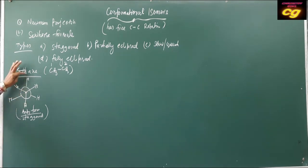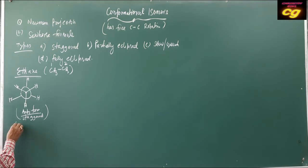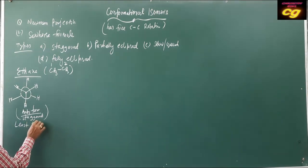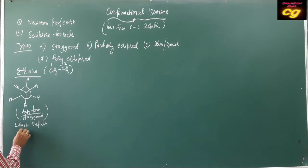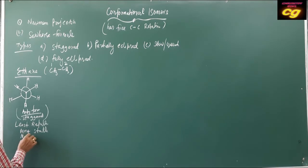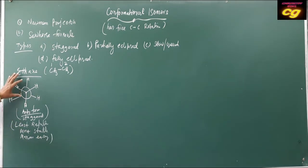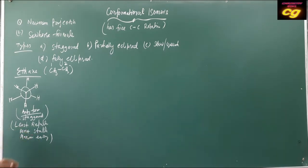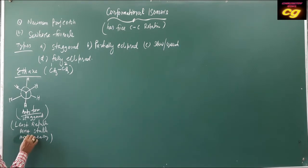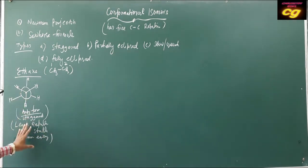In the staggered form, as the C-H bonds on front and back carbons are opposite to each other, there is least repulsion. Least repulsion means the structure is most stable and has minimum energy. So the anti or staggered form has least repulsion, most stability, and minimum energy. One form can be converted to another by rotation of the front carbon by 60 degrees.